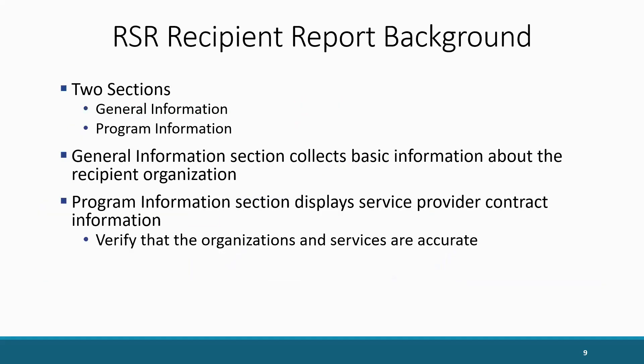There are two sections of the recipient report: the general information section and the program information section. The general information section displays basic information about the recipient organization. This information is pre-populated from the EHBs; however, if there are any updates or changes, they can be made in this section of the report. The program information section is where you will see a list of all the organizations your agency has indicated to have provided Ryan White services for the reporting period. Recipients will be able to look over and verify the accuracy of services listed for each organization.